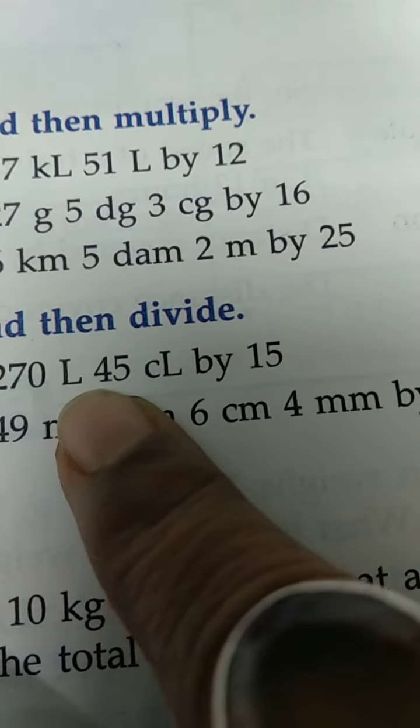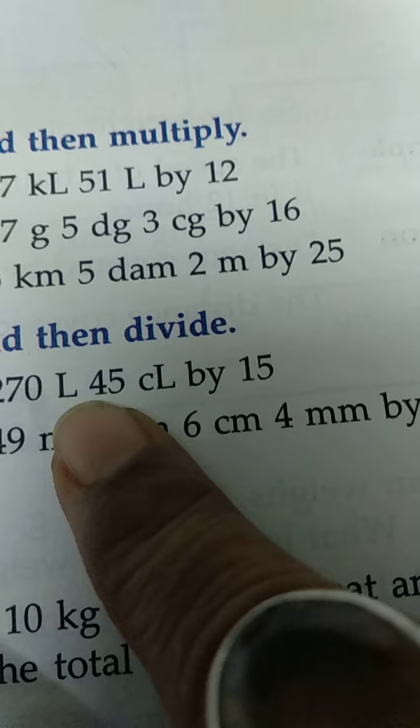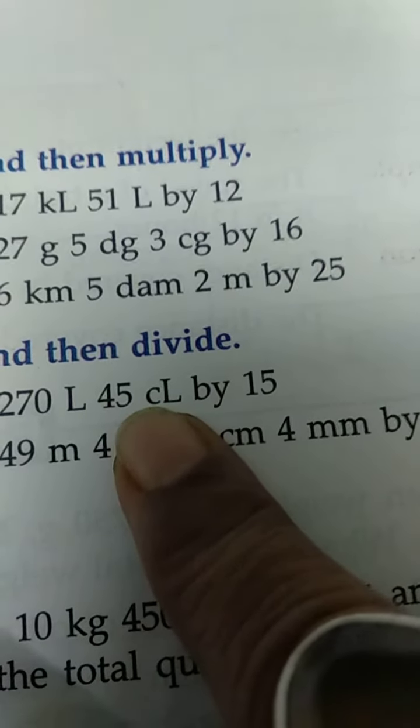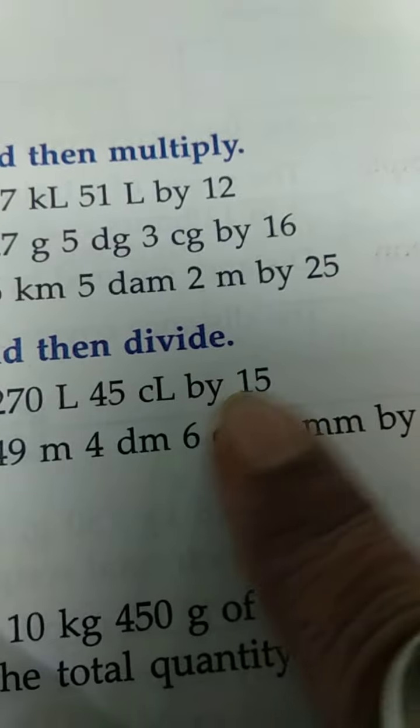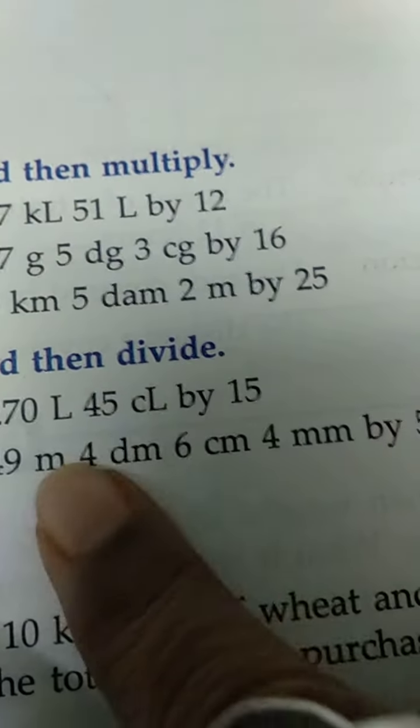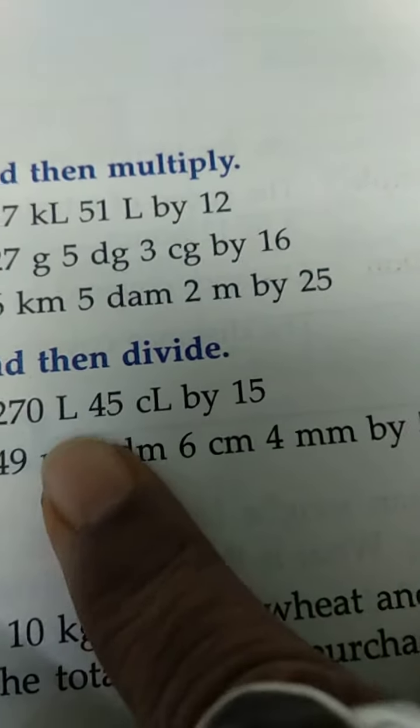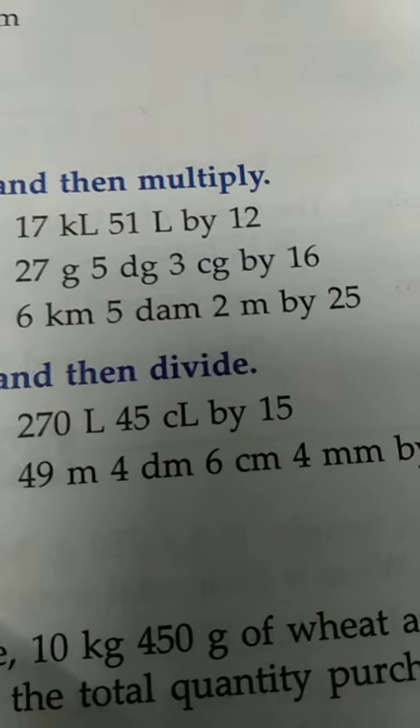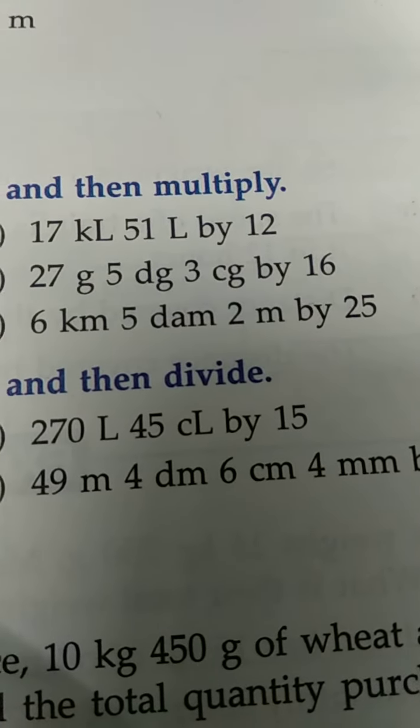So it is 45 Cl, that means before it, DL is not there, but here DL is 4, so 4 DL, 5 Cl, and L is not there, that will be 0. So 45 Cl means 0.450. So let's see how to write the sum. Rest you will do the sum afterwards, next class.